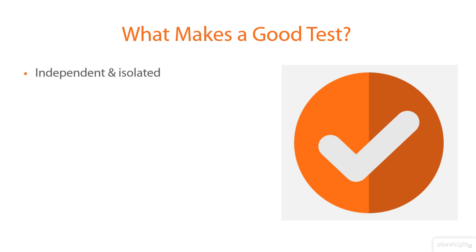First off, each individual test should be independent and isolated from all of the other tests. If we have two tests, A and B, if test A runs and then test B runs, we should get the same result as if the order was reversed. The tests should be able to be run in isolation or with a whole host of other tests and still get the same results.